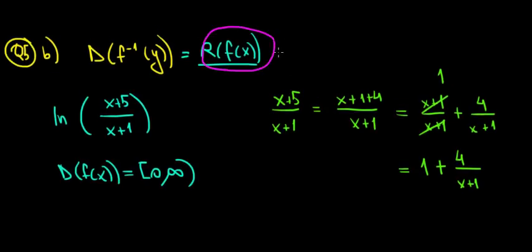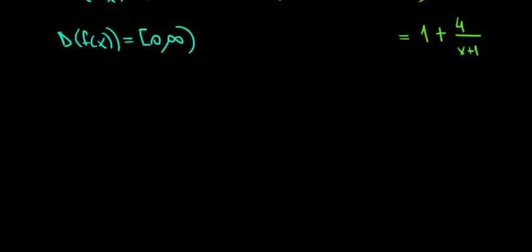We have to give values into the original function. So we have to give values over here to find out what we get out. So how do we do that? What is 1 plus 4 divided by x plus 1?